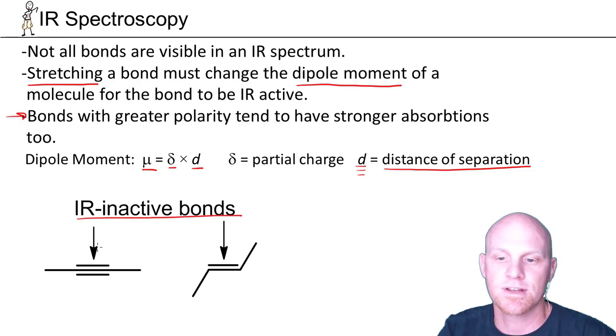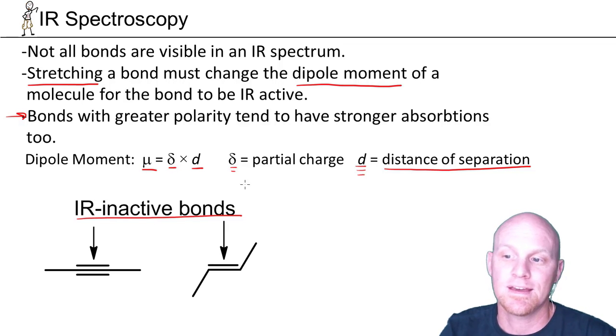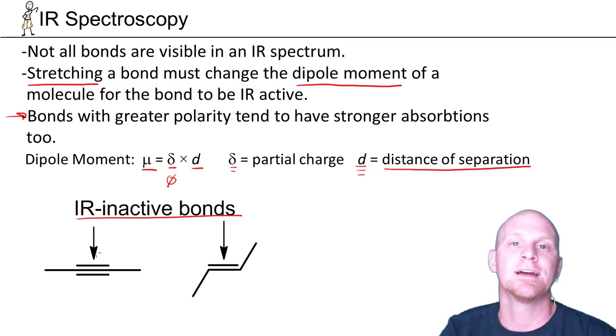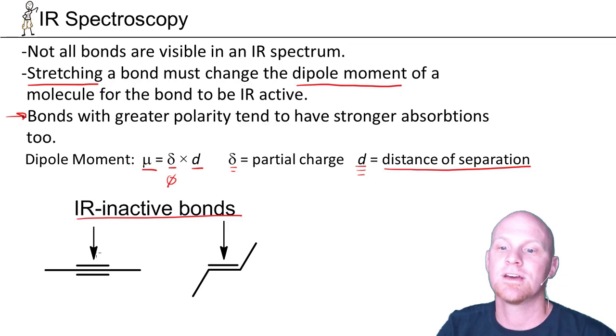First one is in what we call an internal alkyne, perfectly symmetrical. This bond is completely nonpolar. If you look at the delta, it's got a delta of zero. When we stretch that bond, it's still going to have a delta of zero. Zero times no matter what distance you stretch it apart, it's still going to give you a zero dipole moment. Before you stretch this bond, it's got a dipole moment of zero. After you stretch this bond, it's got a dipole moment of zero. Since it didn't change, that is going to be an IR inactive bond. No infrared light is going to be absorbed whatsoever.